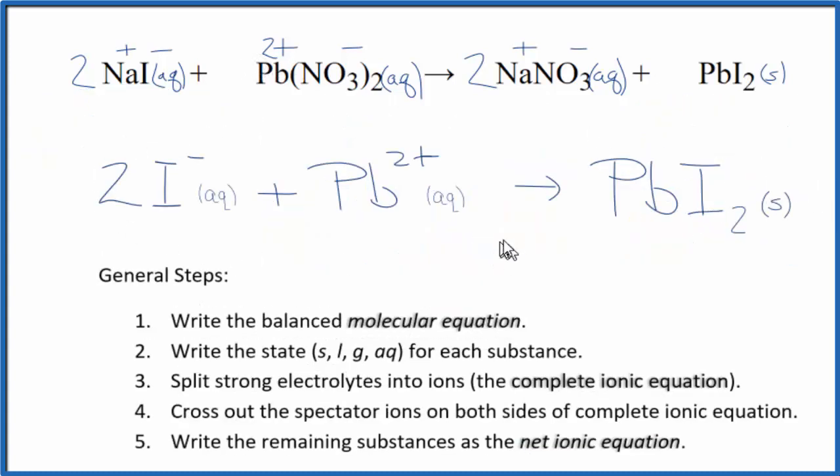So this is the balanced net ionic equation for sodium iodide plus lead-2 nitrate. You'll notice that charge is conserved. I have 2 negative charges, 2 positive charges. They cancel out neutral product. You'll also note that the atoms, number of atoms, are the same on both sides of the equation.